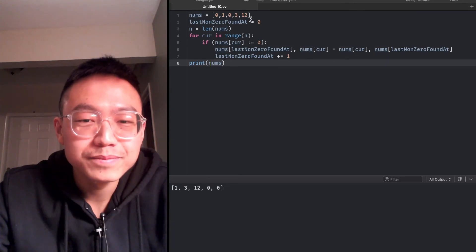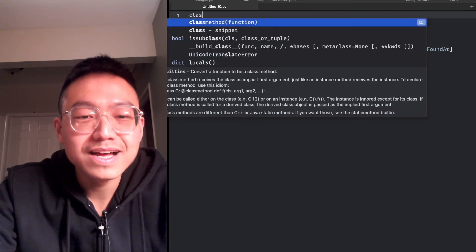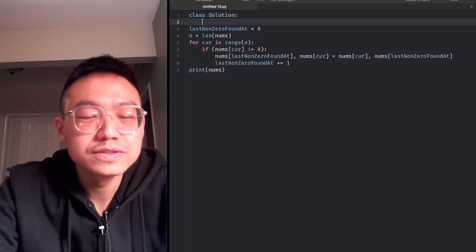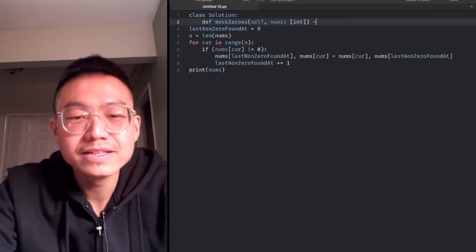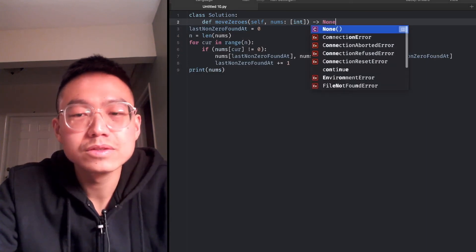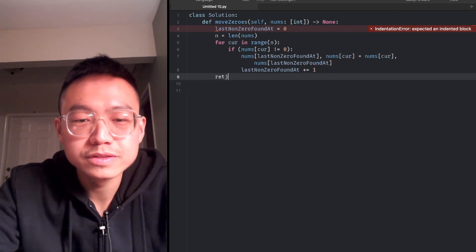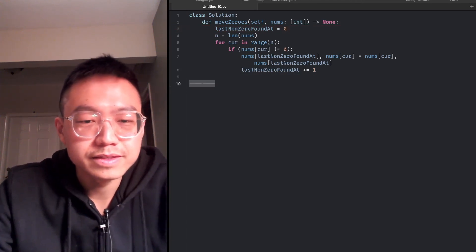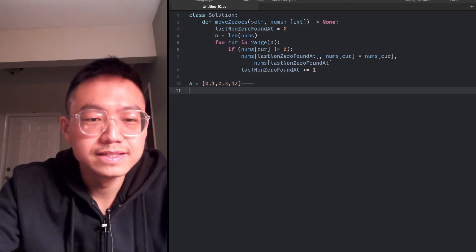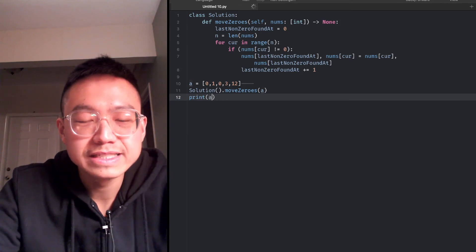Now let's turn them into a class. Class solution, define moveZero, self, nums integer array, and return none. Give them indentation. This just returns none. We just have a solution dot moveZero, then print a. Yes, we did it. We achieved it.